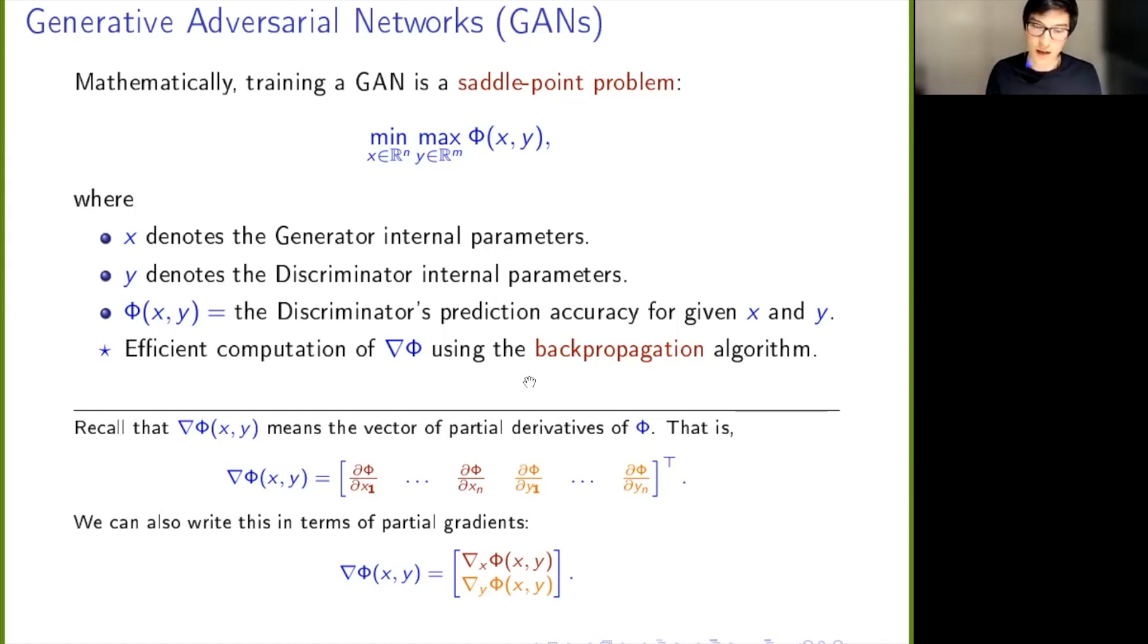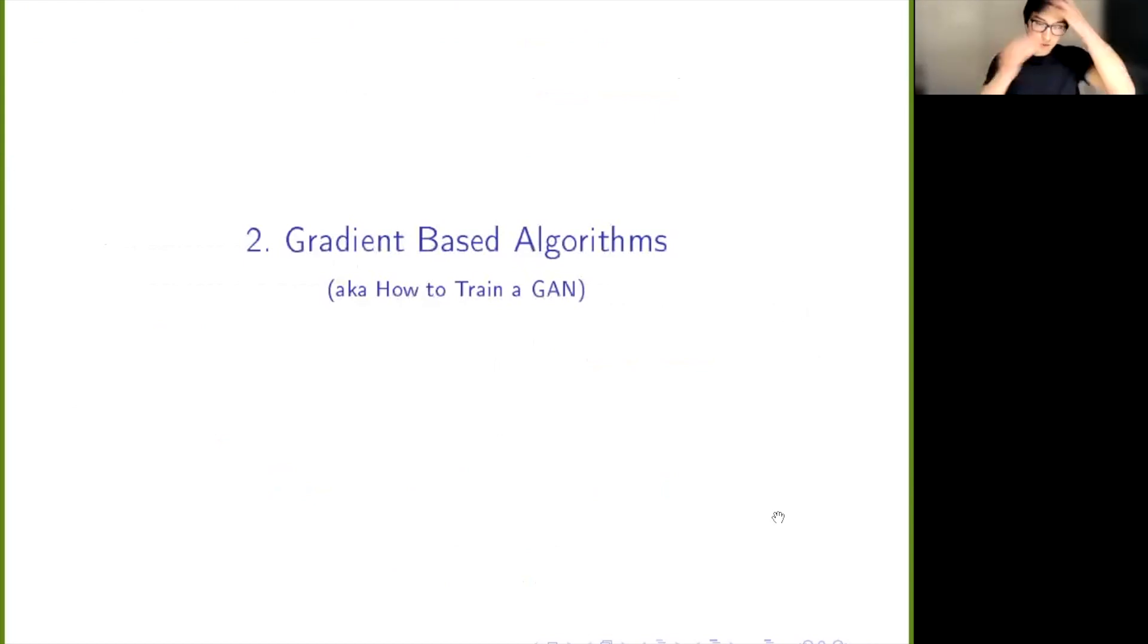The main point is we have access to it and we can compute it efficiently. Just a bit of notation: recall that when I write the gradient of φ using this ∇φ notation, I mean the vector of partial derivatives. Because it's x and y, it's all the partial derivatives with respect to x and then all the partial derivatives with respect to y. We can also write that more compactly in terms of what I'll call partial gradients. You can rewrite all the x partial gradients as this notation here, and you can do all the y ones in this orange part here.